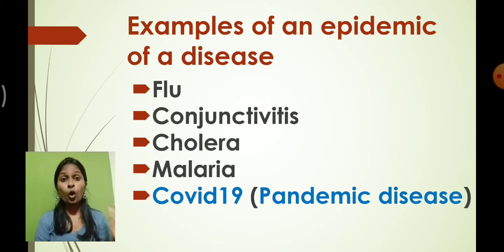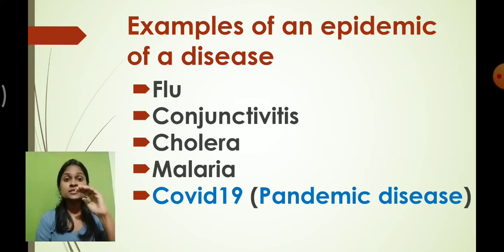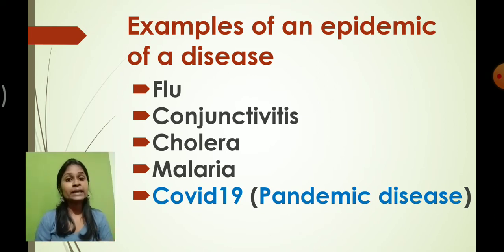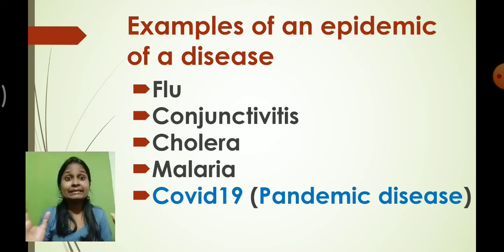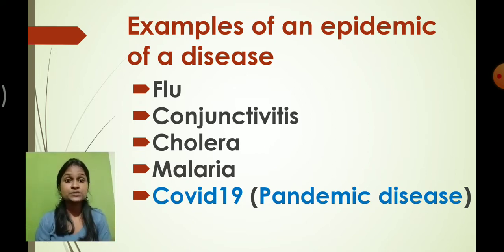Right now, the whole world is suffering from COVID-19, which is an example of a pandemic disease. The difference between epidemic and pandemic: when people in a smaller area are suffering from the same disease, we call it an epidemic. Pandemic is more than epidemic — when many countries or the whole world is suffering from the same disease at the same time, that disease is called a pandemic.